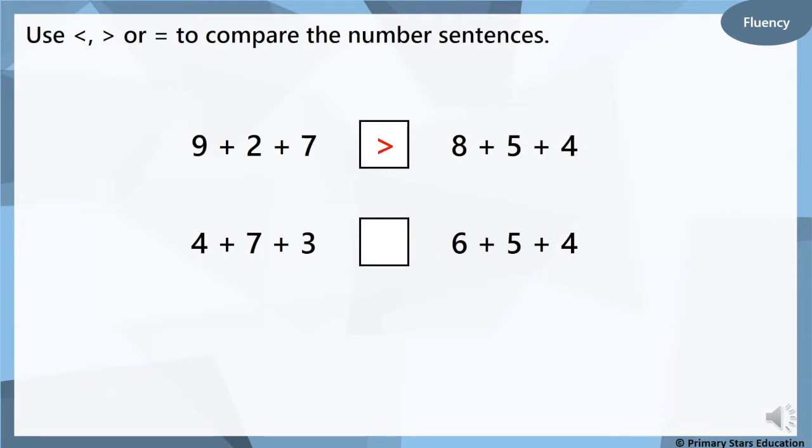Okay, pause and have a check of this one. Okay, let's check. 4 add 7 add 3 is less than 6 add 5 add 4.